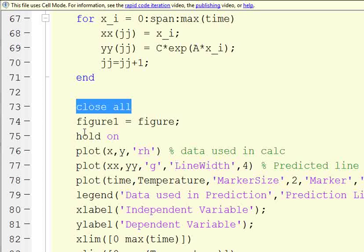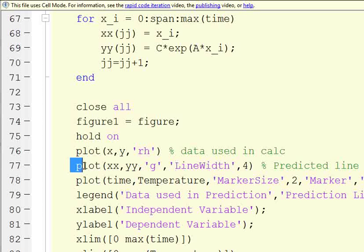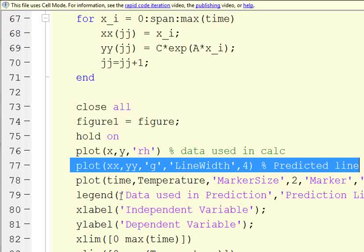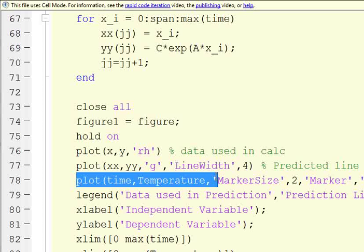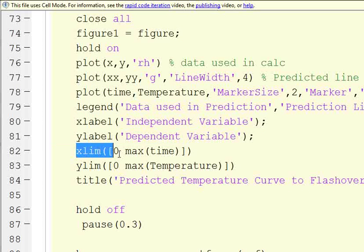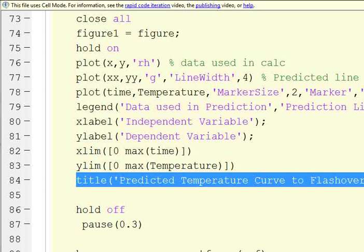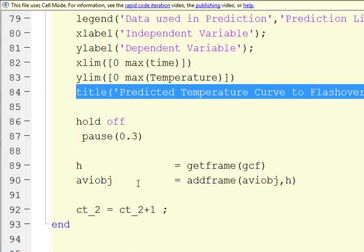So we're going to close the figures, generate figure one. We're going to put a hold on. Then we're going to plot the data used in the calculation as red stars. We're going to plot the predicted line as a green line with width four, so it's going to be kind of thick. And then plot all of the time temperature curve with blue plus symbols. And then we're going to generate a legend, label the axes, and create our own X and Y limits. And then title it using predicted temperature curve.